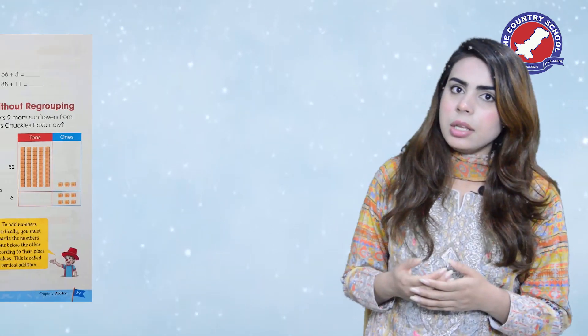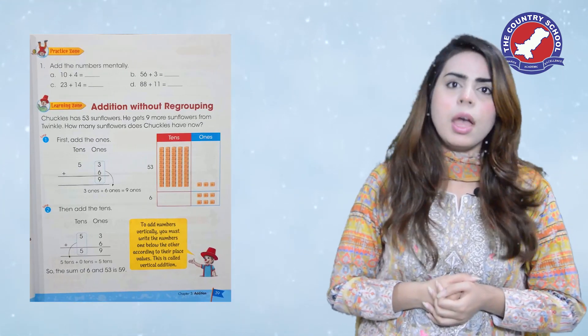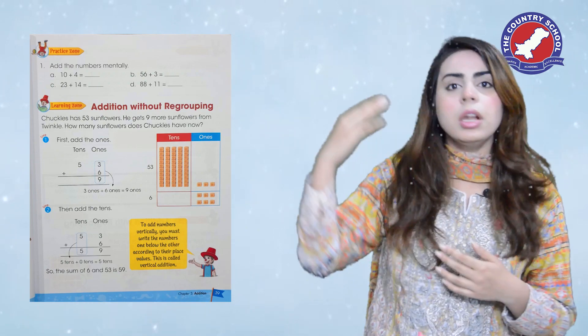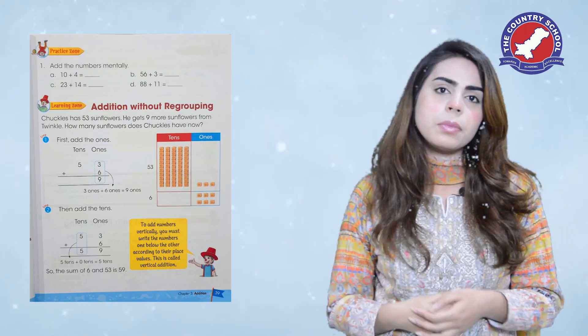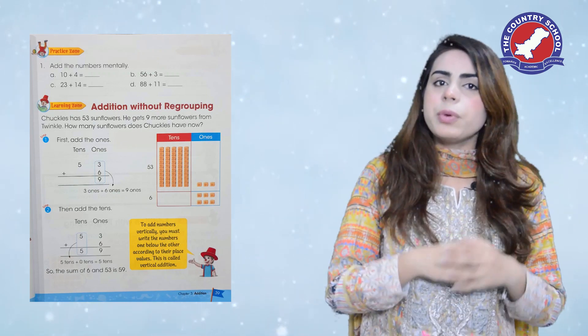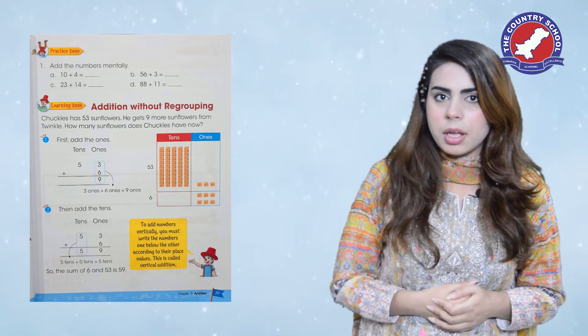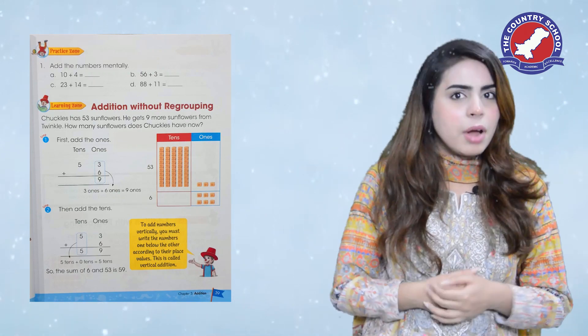14! 14 — very good! It's very easy and simple, aap logo ko bahut maza aayega karte hue. Alright, aapke paas page number 39 ke upar isi tarah kuch maze-maze ke questions diye gaye hain in the practice zone on the very top of the page — here you can see it. Aapko yeh questions apni book ke upar hi solve karne hain. I'm sure aapko bahut maza aayega because it's very easy and simple, right? Very good!